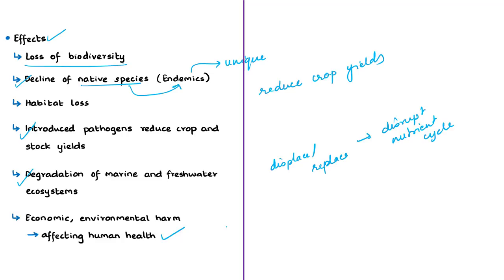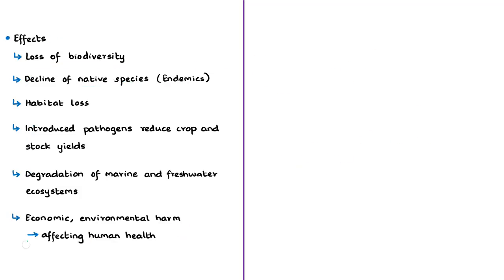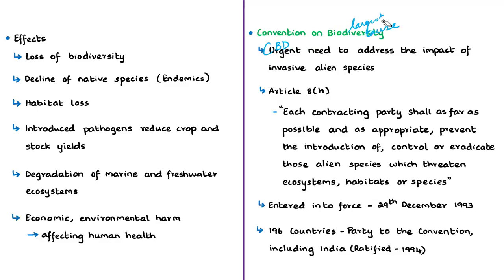All these biological invasions by invasive alien species cause great threats to biodiversity and have already had devastating consequences for the planet. According to the Convention on Biological Diversity, invasive alien species are the second largest cause of biodiversity loss in the world. The CBD even states that introduced species are a greater threat to native biodiversity than the combination of pollution, harvest, and disease combined.